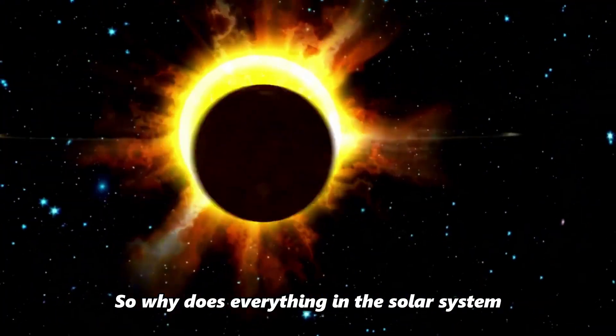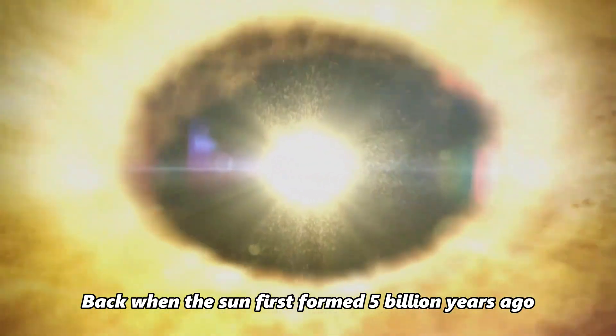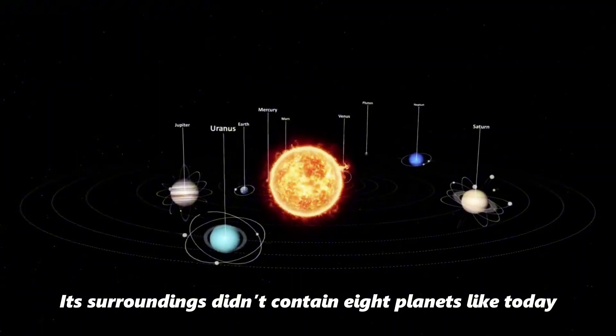So why does everything in the solar system move around the sun in the same direction? Back when the sun first formed 5 billion years ago, its surroundings didn't contain 8 planets like today.